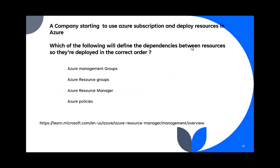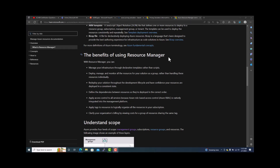Question 67: A company is starting to use an Azure subscription and deploy resources in Azure. Which of the following will define the dependencies between resources so they are deployed in the correct order? The answer is Azure Resource Manager. Azure Resource Manager allows you to define the dependencies between resources so they are deployed in the correct order.